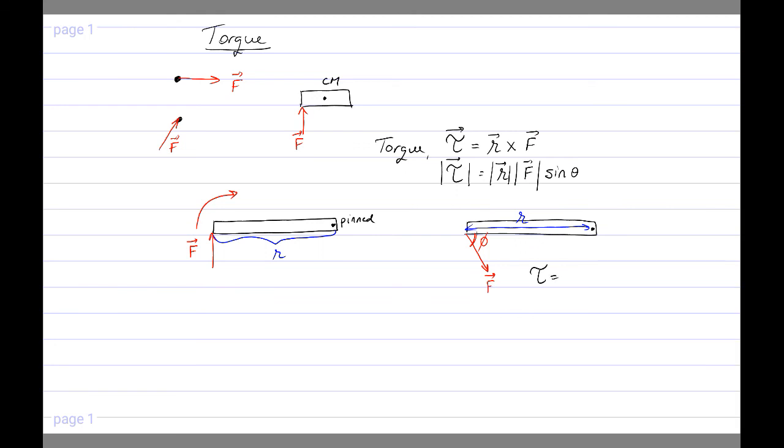And then the torque will be R F sine phi, because essentially we're just taking the perpendicular component. So this is F sine phi multiplied by the lever arm R.